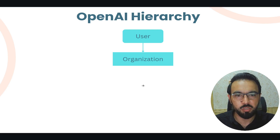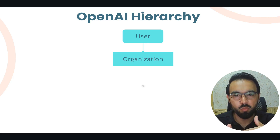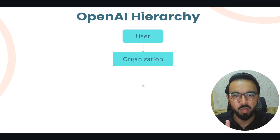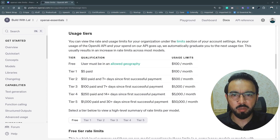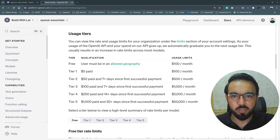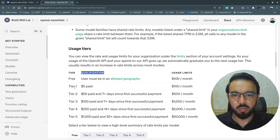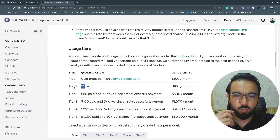When you have enough spending, you will move to tier two and your organizational limits for API requests will increase accordingly. As you spend more, you move to the next tier and your organization limits increase. Here in the OpenAI documentation you can see the different usage tiers for the organization.